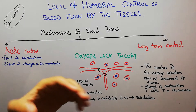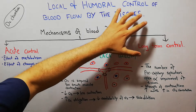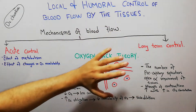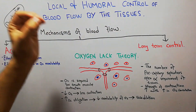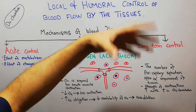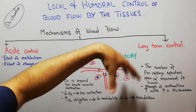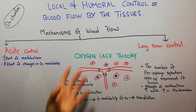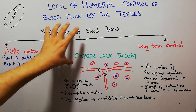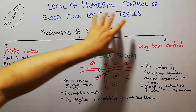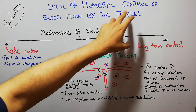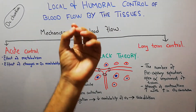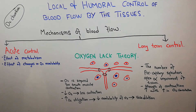Whenever the needs of the tissue increase or decrease, there are local and humoral control mechanisms — either changes at the level of the tissue itself, or signals that come from outside. Our focus here is on the local changes that occur in the tissue which alter blood flow, where the tissue itself plays the key role.